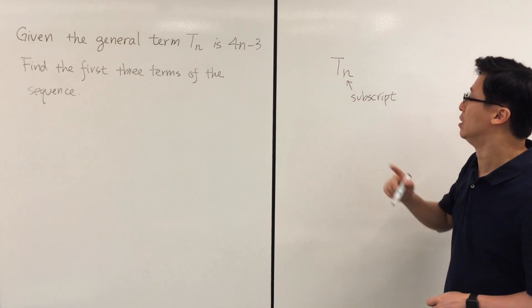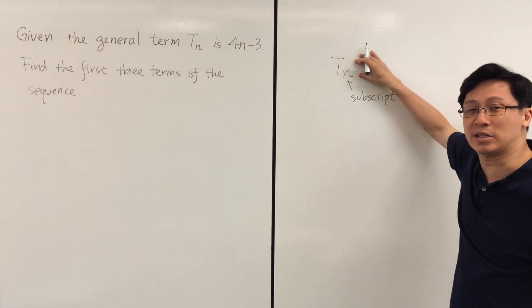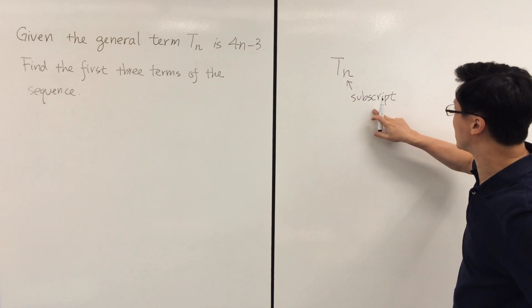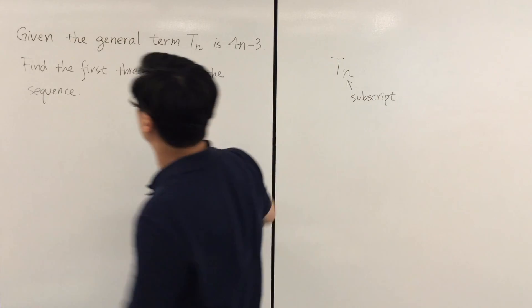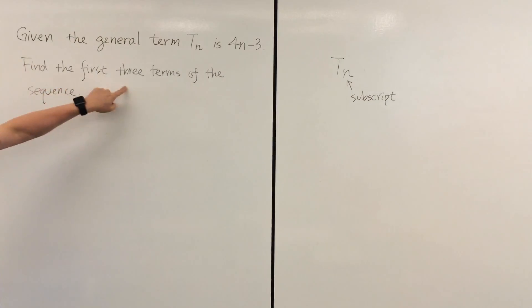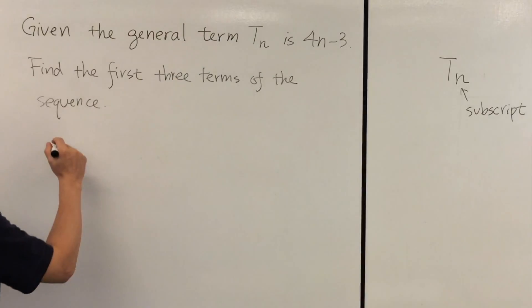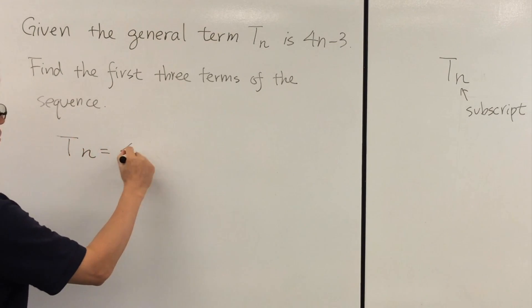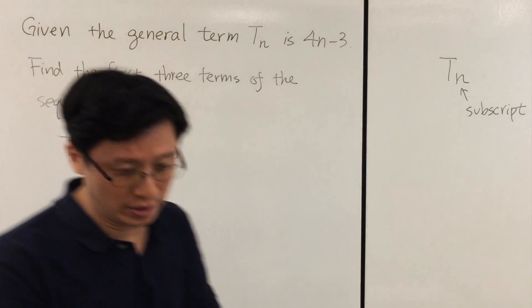This is not T times n. This is not a multiplication, just a subscript. So can we find the first three terms of the sequence? We have T_n equals 4n minus 3.